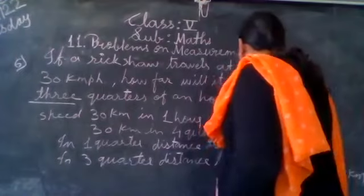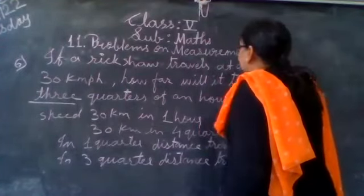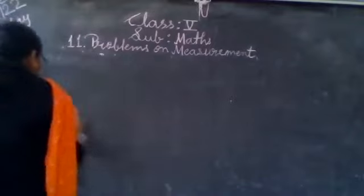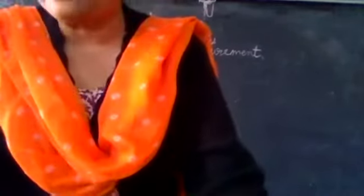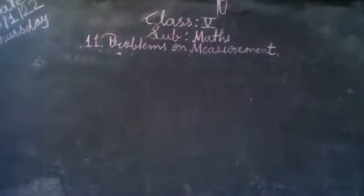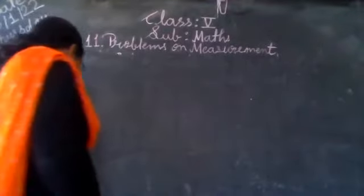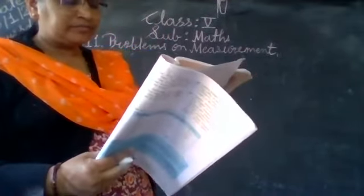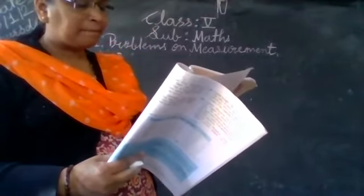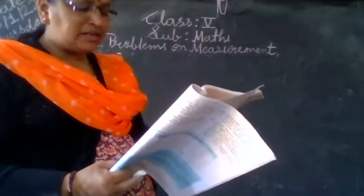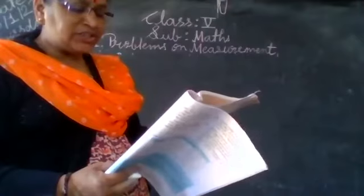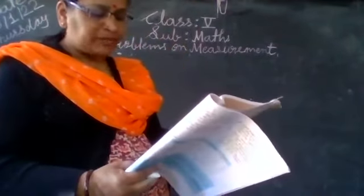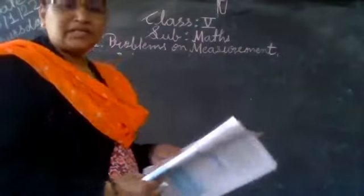Let's see another question. This question is quite lengthy. During a cleanliness drive, children cleaned the public park in their town. They collected 3 quarters of a kilogram of plastic bags and 5 and a half kilograms of other garbage. How much garbage did they collect in all? I am writing this question in short.